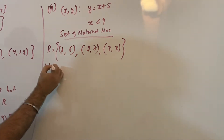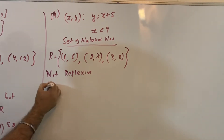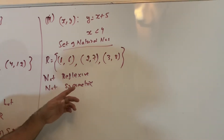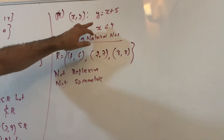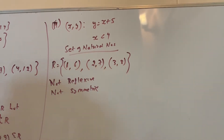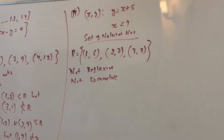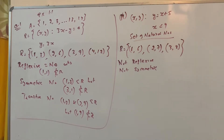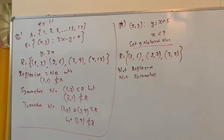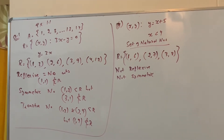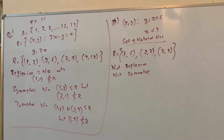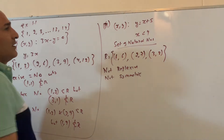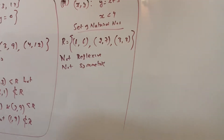Again you can check for symmetric, reflexive, and transitive. It is not reflexive — (1,1) is not there. It is not symmetric — (1,6) is there but (6,1) is not there. Similarly (2,7) is there but (7,2) is not there. So like this you can find the properties.